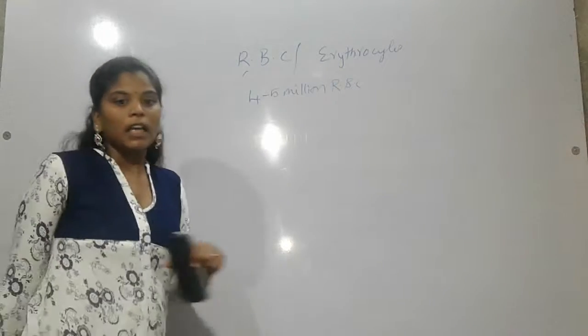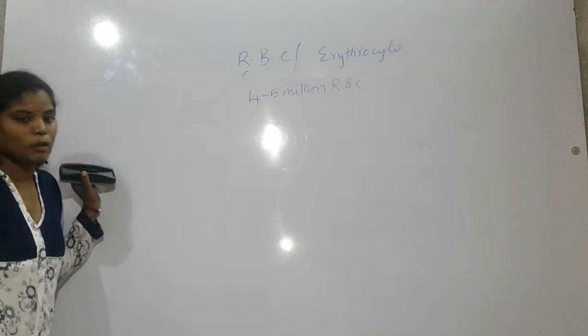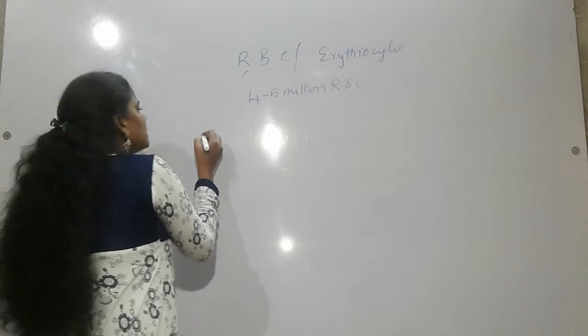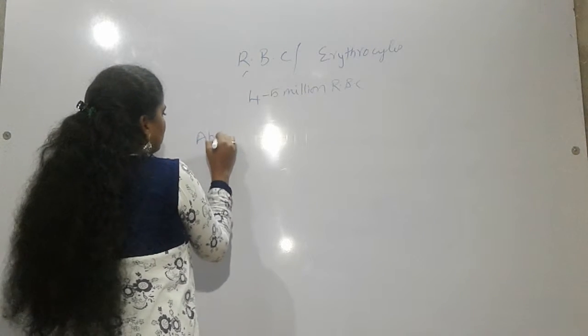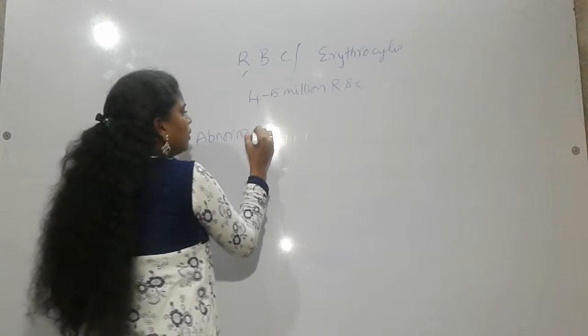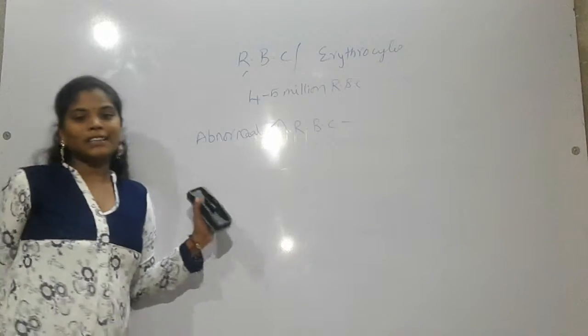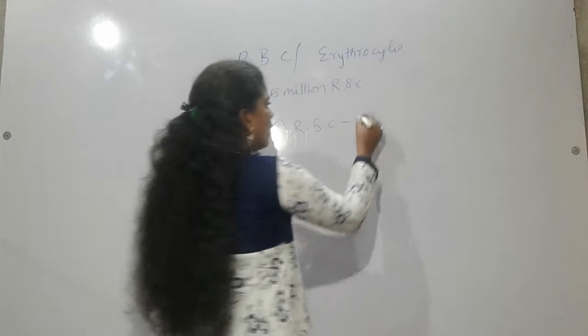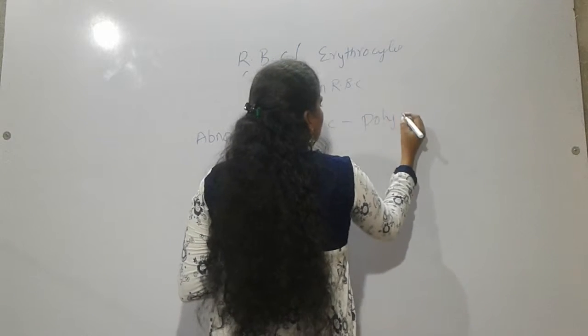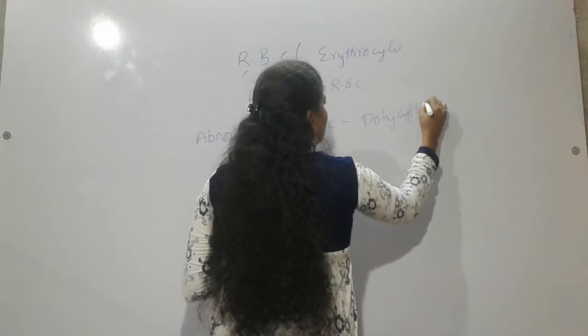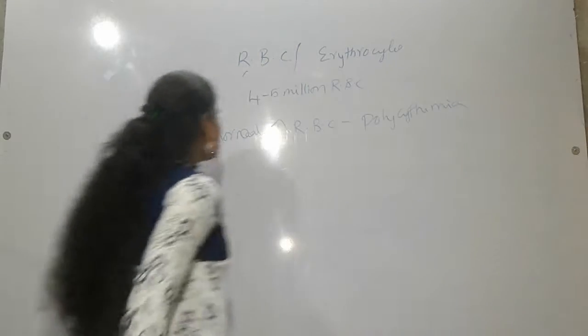It is the normal level. Abnormal increase of RBC, it is called as polycythemia. Polycythemia. This is the disease condition.